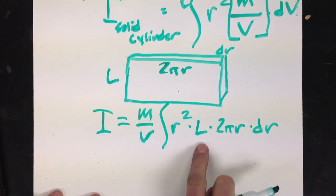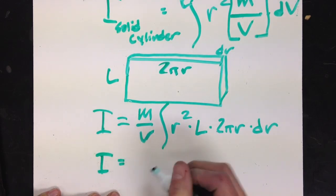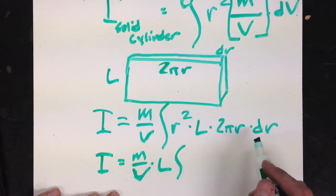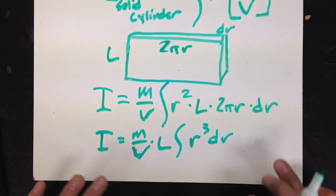So let's pull out our other constant, L. So I end up with m over v, times L, times the integral of, well, now I've got r squared times r dr. Now I am able to integrate.